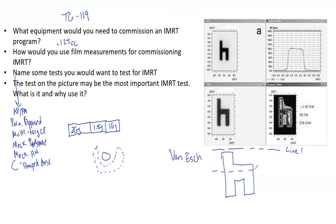Line two shows what the homogeneous dose looks like: MLCs on one side, MLCs on the other side, but there is a big nice strip of homogeneous dose in between. Then profile three, which is the most difficult.